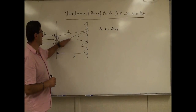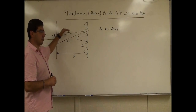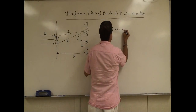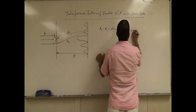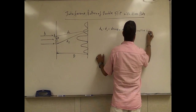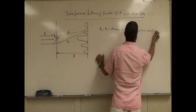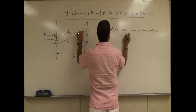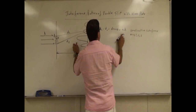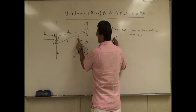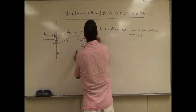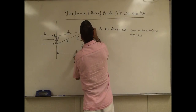When d sine theta is equal to n lambda, this gives you constructive interference. So n equals 0, 1, 2, 3 — n equals 1 gives you the first bright fringe next to the central maximum. This is called the central maximum, and this is called the first order maximum. n equals 2 gives you the second order maximum, and so on.